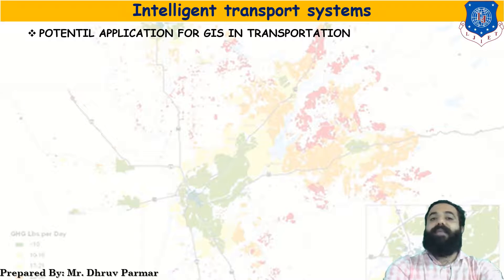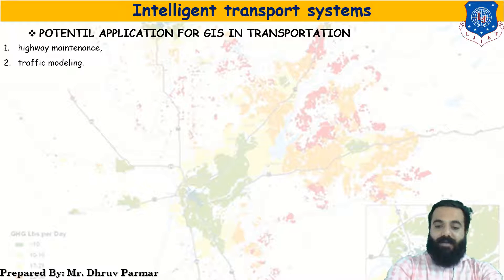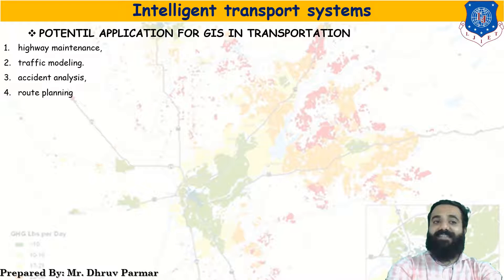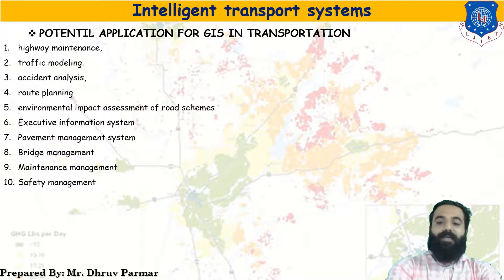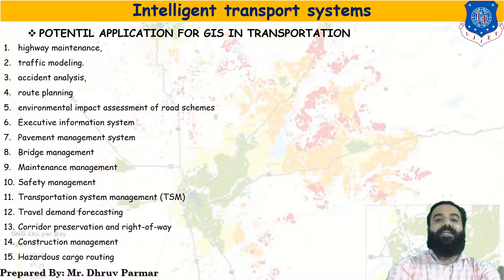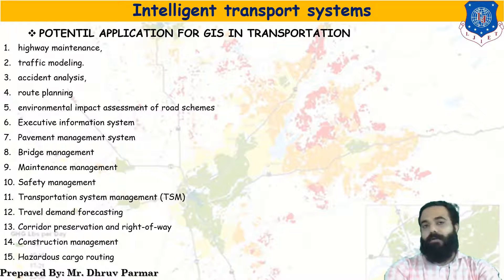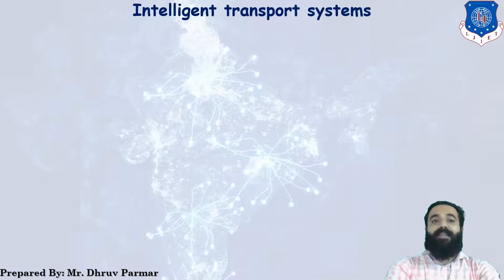There are several applications of GIS in transportation. These include highway maintenance, traffic modeling, accident analysis, road planning, environmental impact assessment, pavement management system, bridge management, and maintenance systems. There are lots of applications of GIS in transportation. By using GIS, you can easily predict, calculate, and retrieve data from different parts.